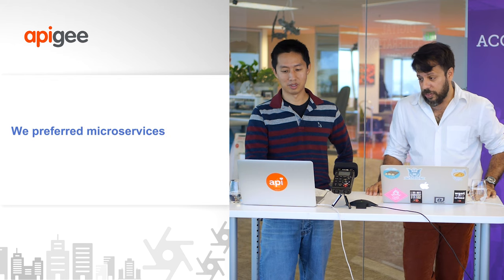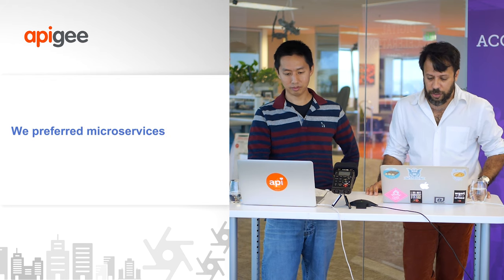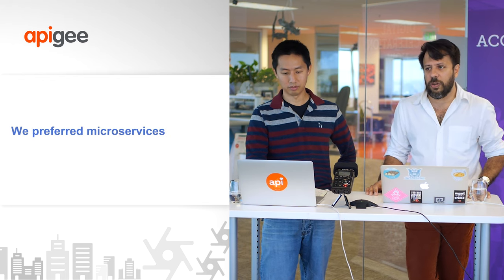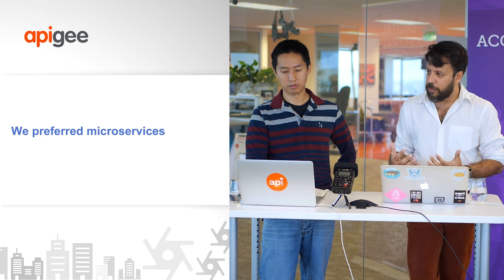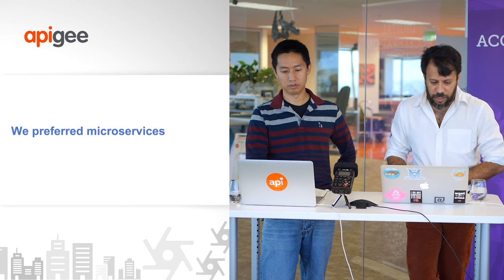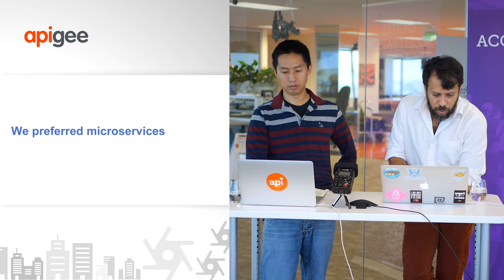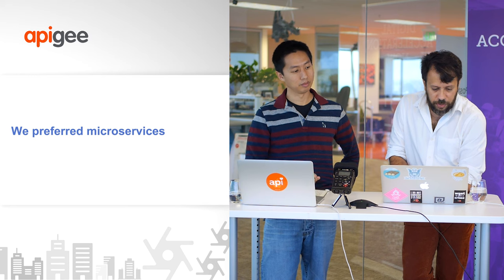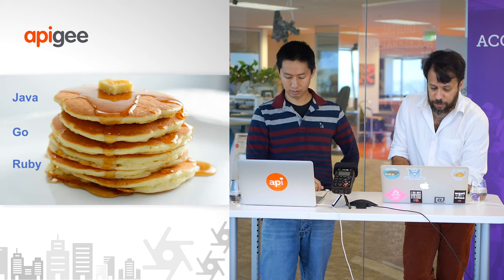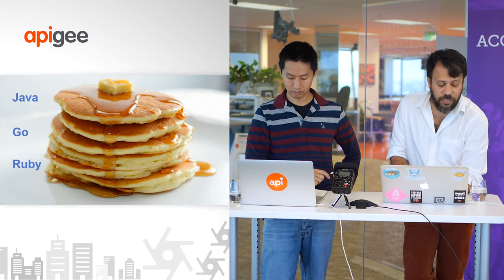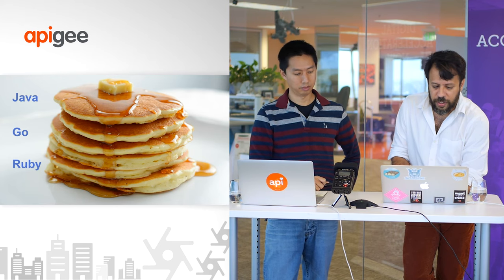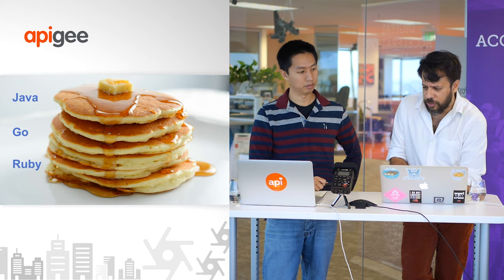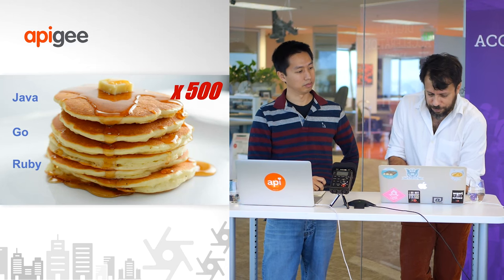So we preferred microservices. Microservices made it easier for us to scale — both in terms of traffic and volume, reliability, and also the number of people committing to the codebase and features we were adding. We moved from a monolith to a stack comprising Java, Ruby, and Go applications all talking to one another — roughly over 500 of them right now.